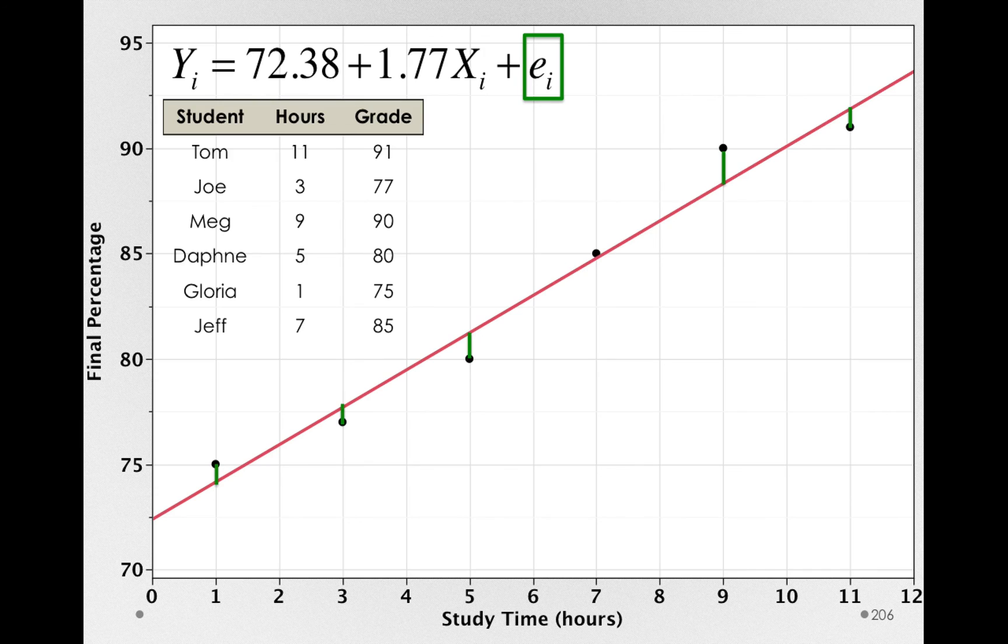Here, I actually have the actual regression function 72.38, the y-intercept, plus 1.77x. Notice that if we plug in the value of x for any individual, we'll get the point on the line that these green bars connect to. So the residuals in our model are simply the deviations between what was actually observed for each of these students and the score that would be predicted for them on the basis of the line.